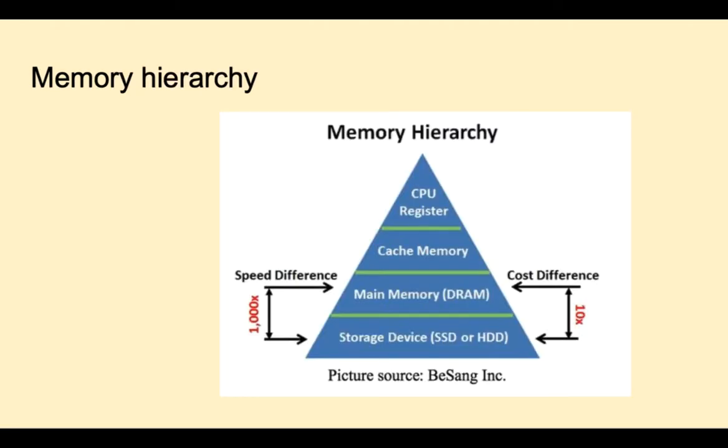Computer systems have many layers of memory with different access speeds and different costs. There's an inverse relationship between speed and cost. This means we have more memory from the cheaper but slower memories and less memory from the faster expensive types of memory.